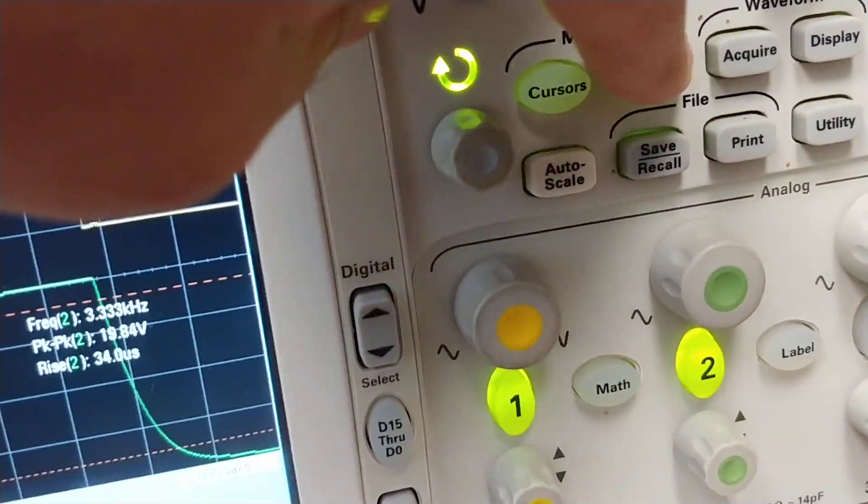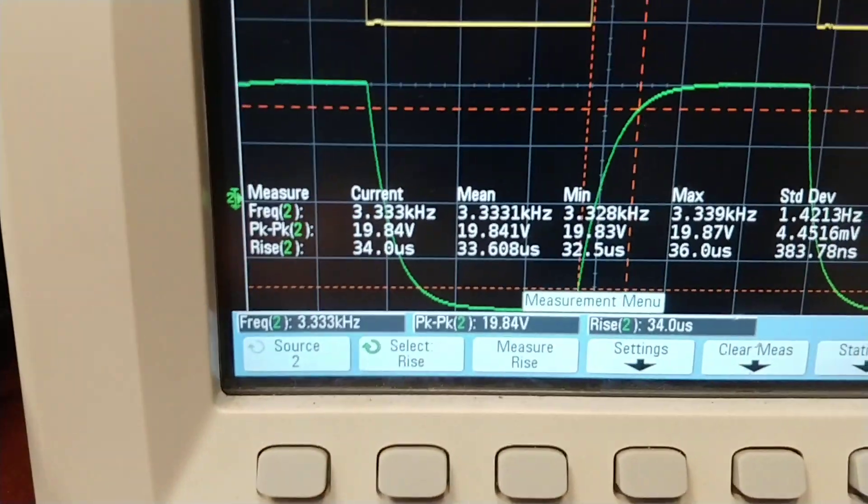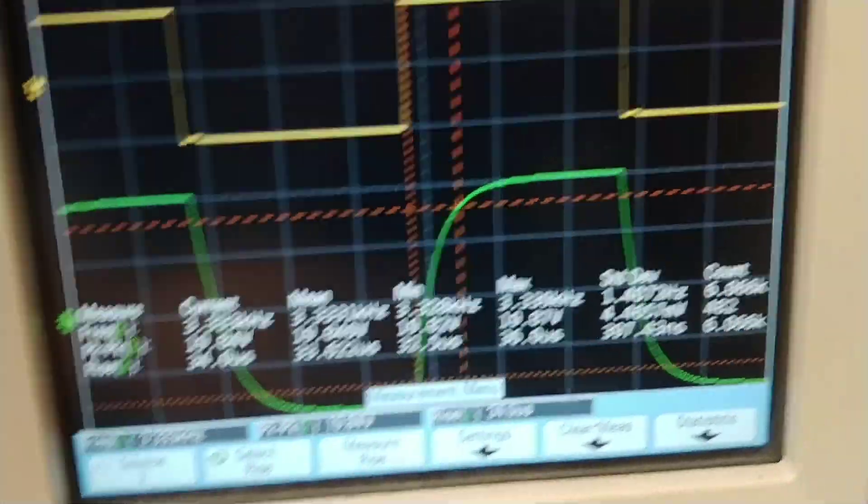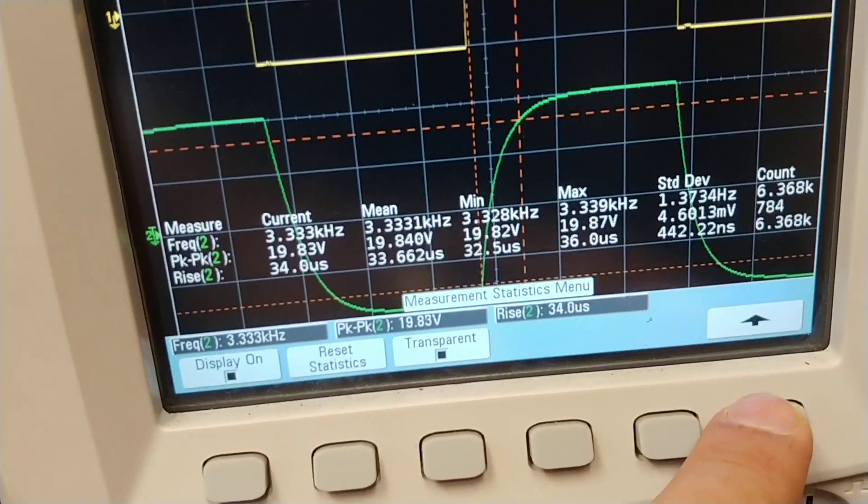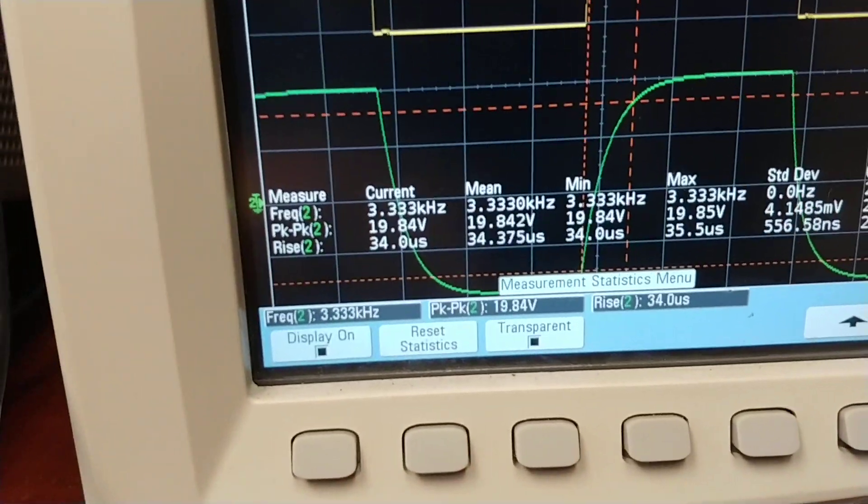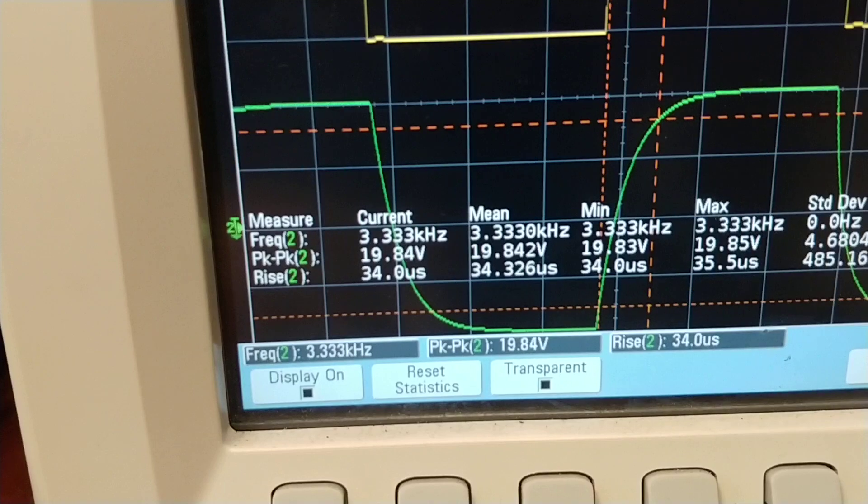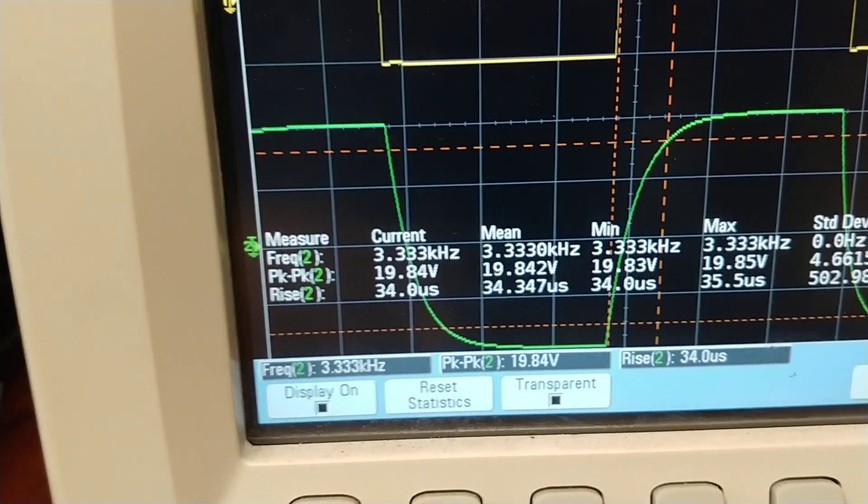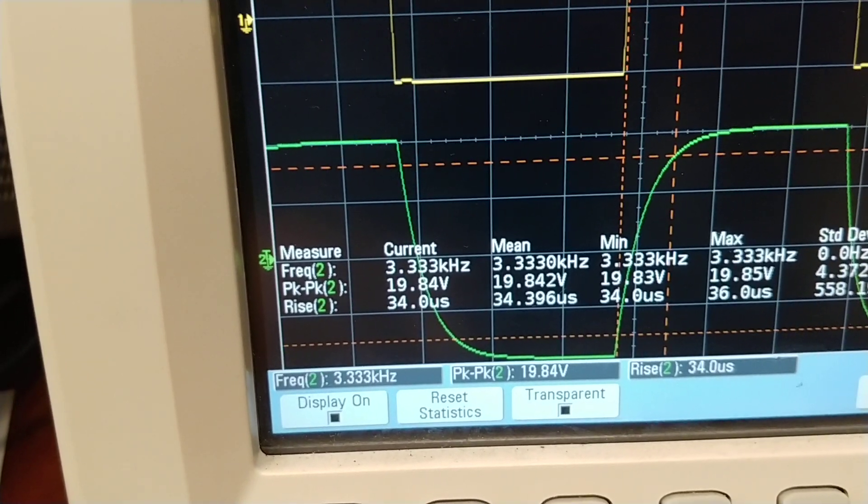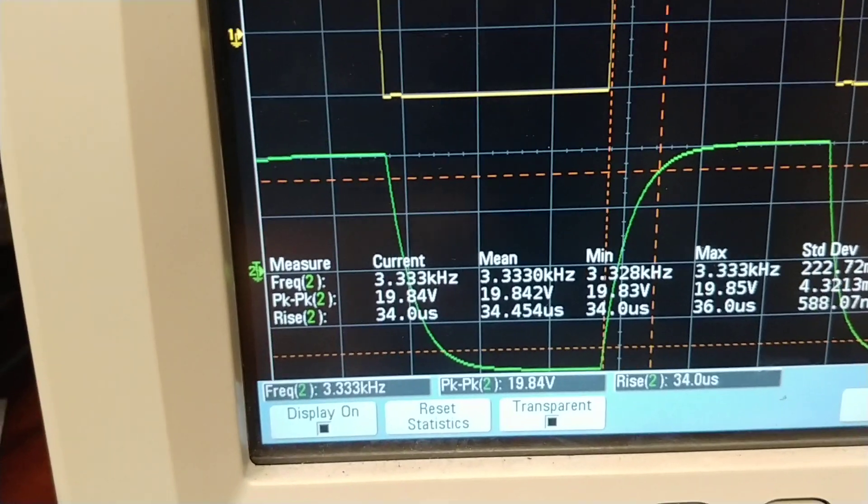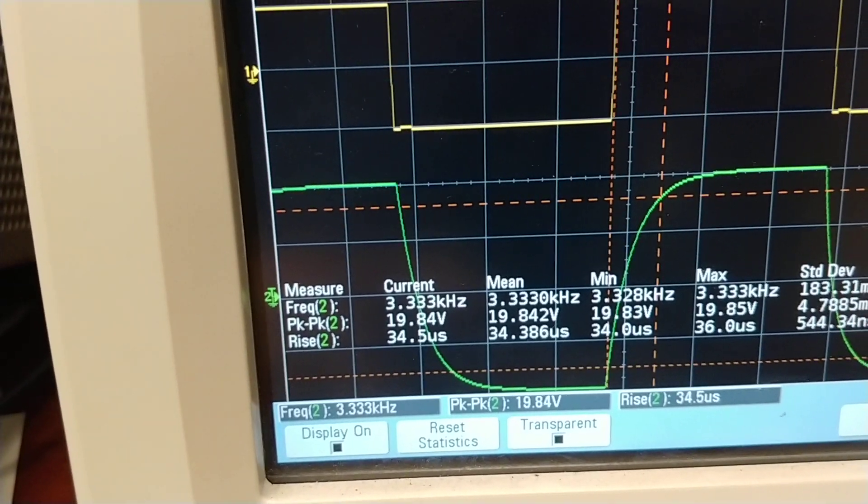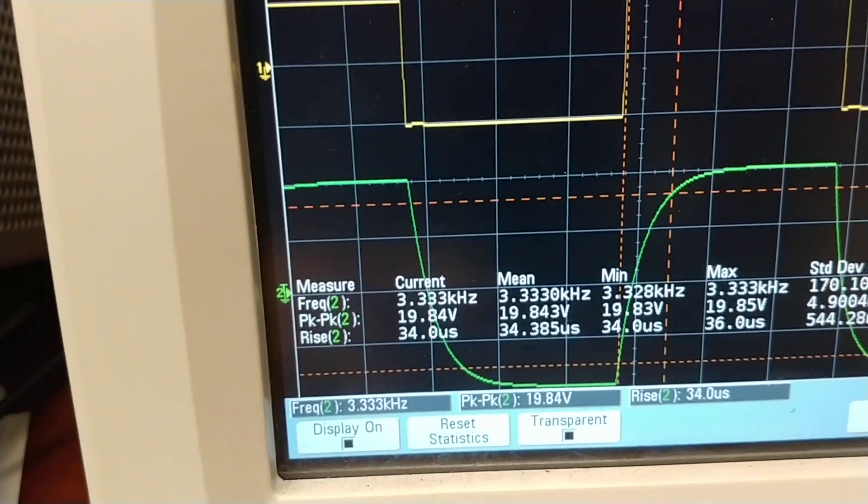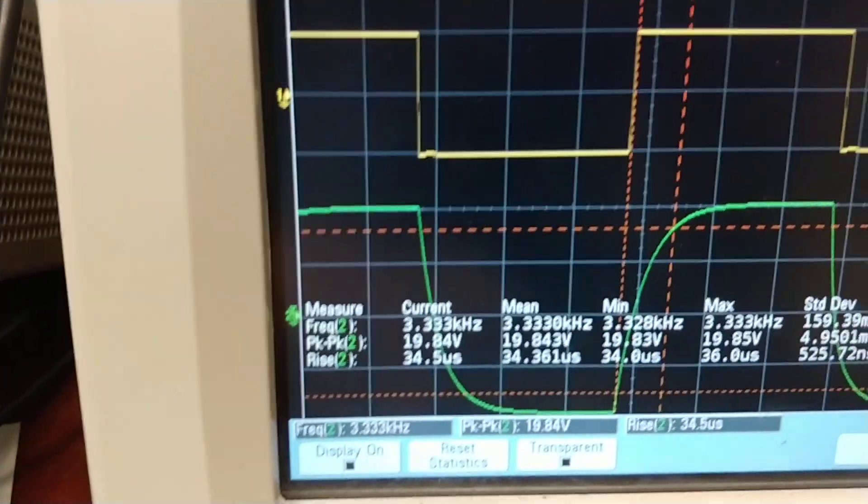Press quick measure again and we can see our statistics here. Since we've been kind of moving around a bit, you would press statistics, reset statistics, and now we're getting a rise time mean of 34.4 microseconds.